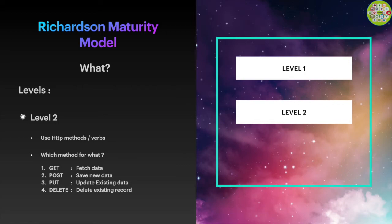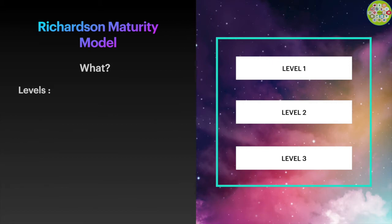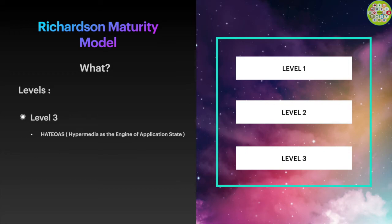Now you are aware of level 2, so let's move to level 3. In level 3 we have a special concept called HATEOAS, which stands for Hypermedia as the Engine of Application State. This is also an important interview question. In HATEOAS, we provide URIs along with the data that we saved or modified.